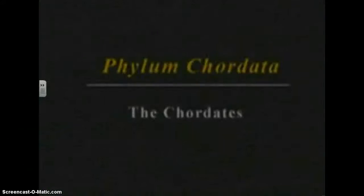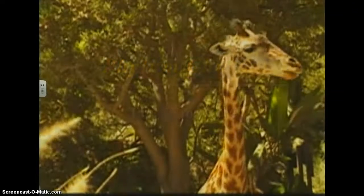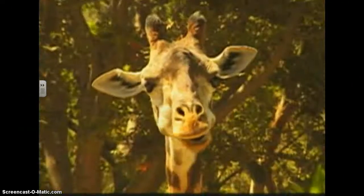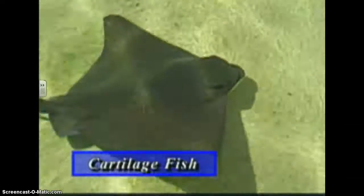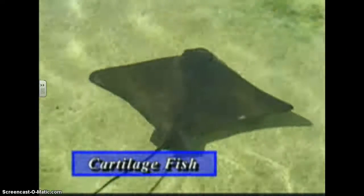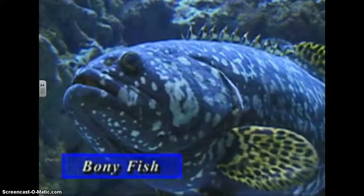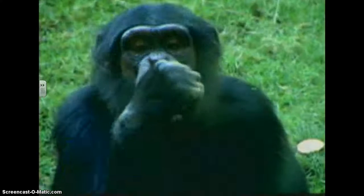The last and the most advanced phylum of animals are the chordates. Almost all chordates are vertebrates, animals with backbones and highly developed organ systems. Vertebrates are the largest animals, and they come in several basic classes, such as cartilage fish, bony fish, amphibians, reptiles, birds, and mammals.